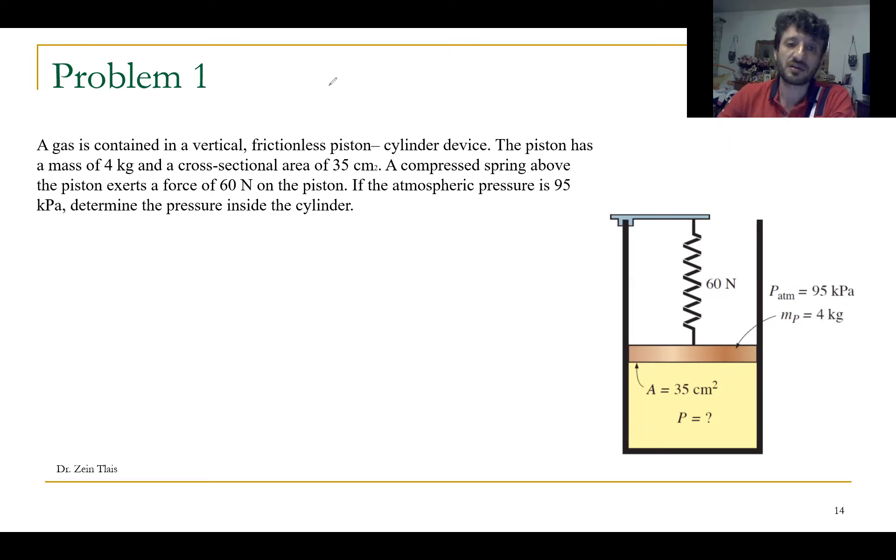Inside the cylinder, we have a quantity of gas with a pressure P, where we have a piston of a mass M of the piston equals to 4 kilogram with a cross-sectional area A equals to 35 centimeter square.